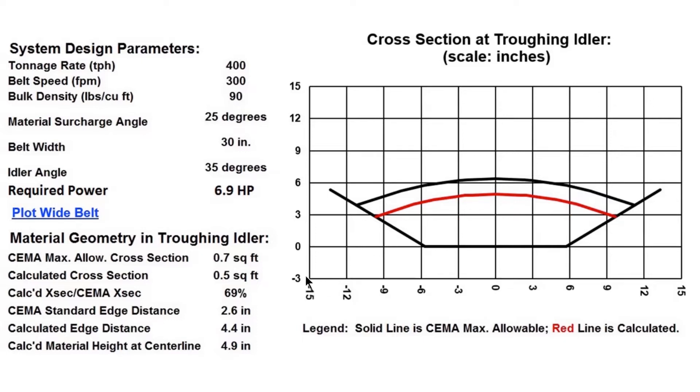On display are the CEMA standard edge distance, which in this case is 2.6 inches, and the CEMA recommended maximum allowable cross section, which is 0.7 square feet. Here you can see that the program has calculated 0.5 square feet as the actual cross section. Notice that the edge distance of our design rate is 4.4 inches. We will use this program to illustrate how to avoid certain pitfalls.